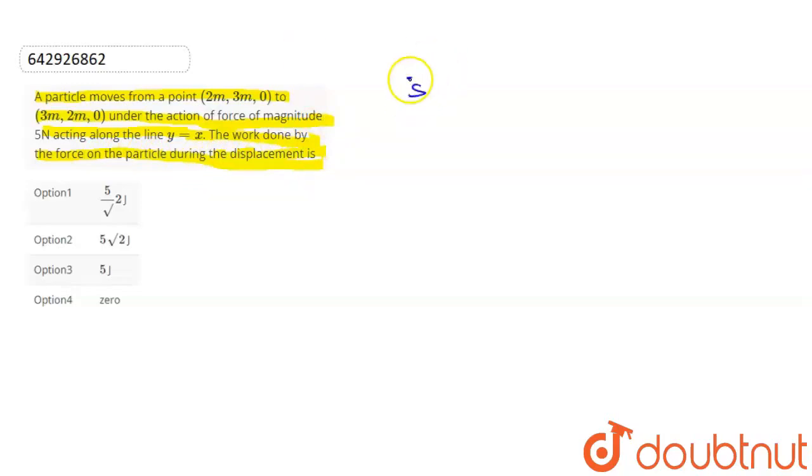Displacement equals r final minus r initial. That gives us (3 minus 2) i cap plus (2 minus 3) j cap. So the displacement is i cap minus j cap.